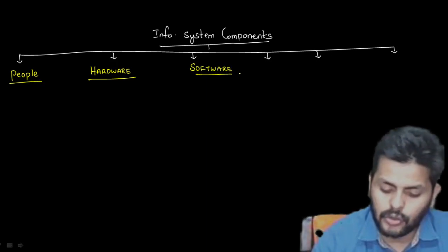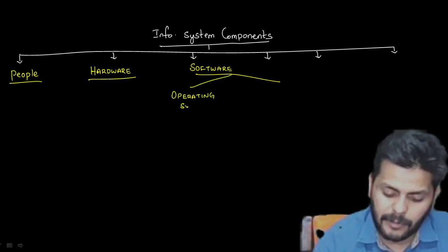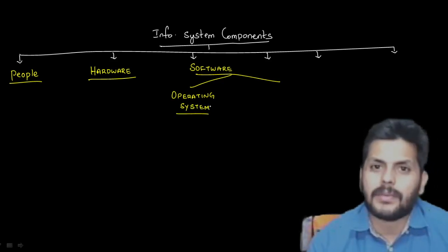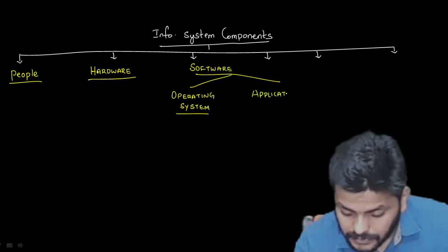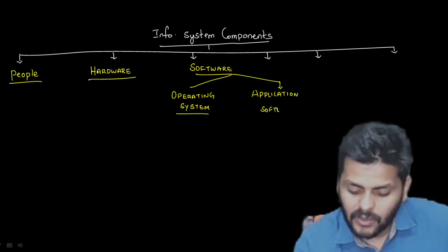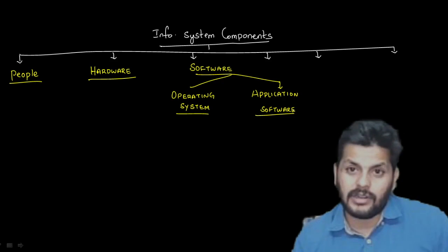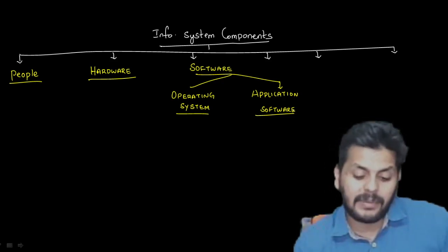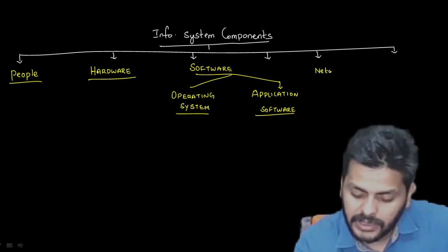Under software, two branches: one is the operating system (OS) — Windows 7, Windows 10, Linux, Unix, Mac. The other is application software. And then moving on, we'll talk about network and communication devices.